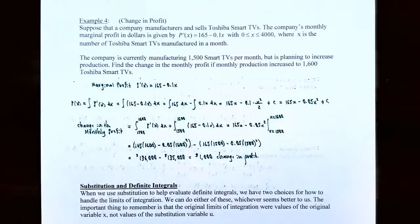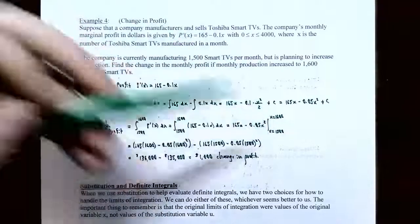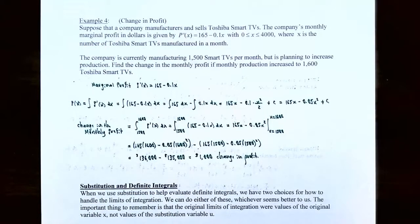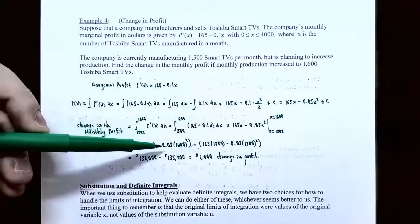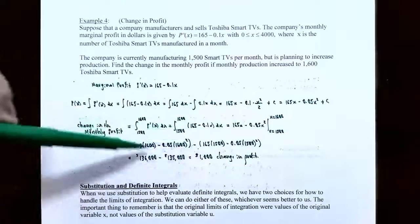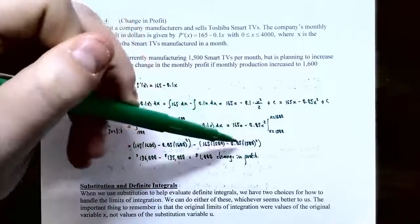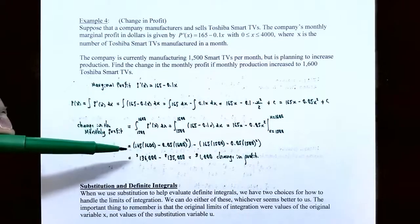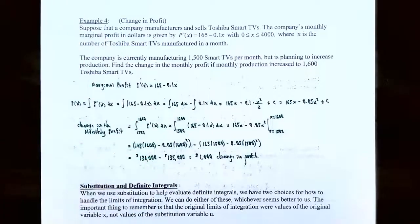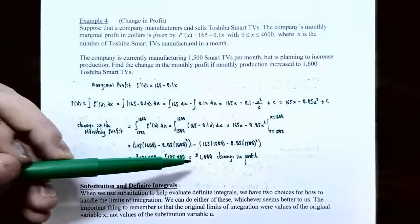The antiderivative of P prime of x is 165x minus 0.05x squared, with c equals zero. Evaluate at the upper limit x equals 1,600 and then subtract at the lower limit x equals 1,500. Plugging in 1,600: 165 times 1,600 minus 0.05 times 1,600 squared gives $136,000. Plugging in 1,500: 165 times 1,500 minus 0.05 times 1,500 squared gives $135,000. The difference is $1,000. If production increases from 1,500 to 1,600 TVs, the company's monthly profit changes by $1,000.